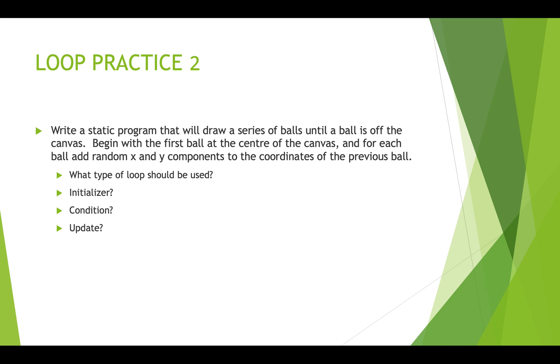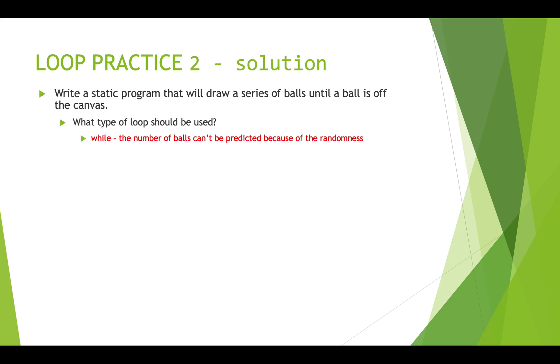So what type of loop should we use? Well, we don't know how many times we're going to have to add to the ball position. So we're going to use a while loop. And our initializers, we're going to set the position of the first ball to width over two and height over two. So we've got ball x is width over two and ball y is height over two.